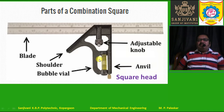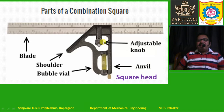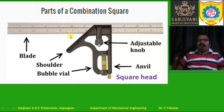This is a combination square and these are its various parts. First, this is the blade, also called a rule. Along with the blade, we have a square head. The blade can be inserted into the slot of the square head, and the square head can slide over the blade. The square head has a shoulder at 45 degrees and an anvil at 90 degrees.